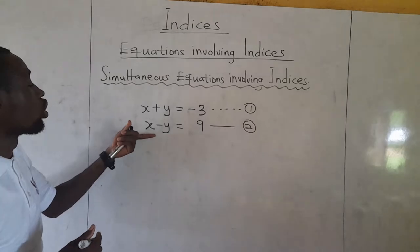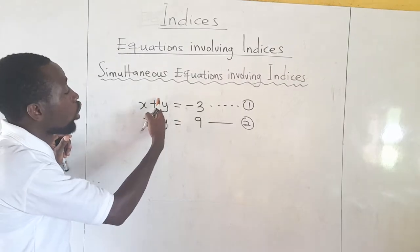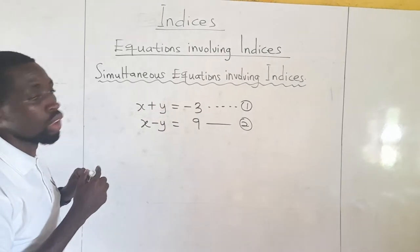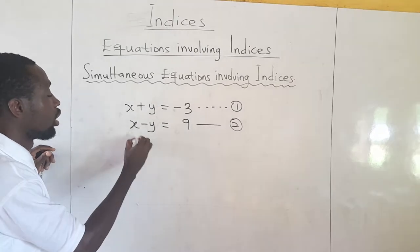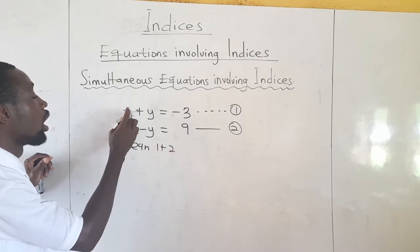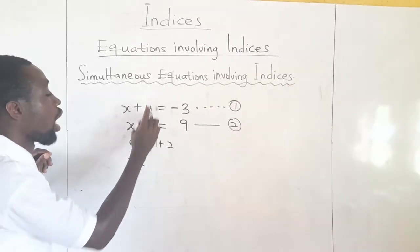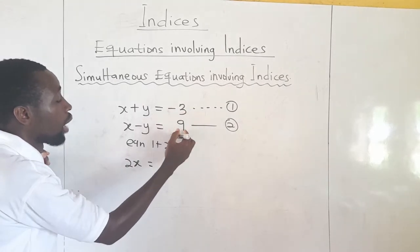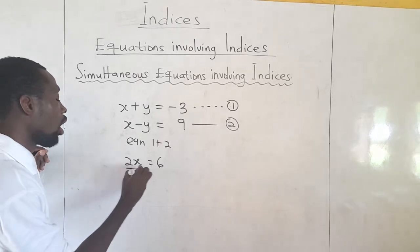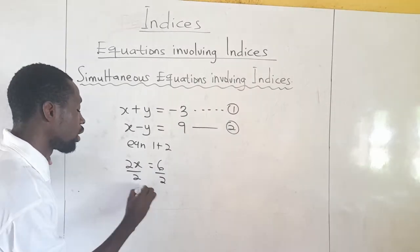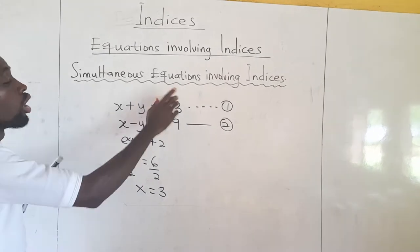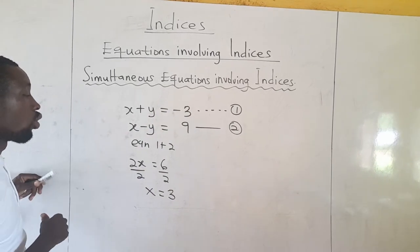I want to use elimination. The coefficient of y here is 1 and the coefficient here is also 1. So if I add the two equations, since this y is positive and this is negative, I will eliminate the y. Adding equation 1 plus equation 2: x plus x gives 2x, y plus negative y is 0, then negative 3 plus 9 is 6. So I've eliminated y. I'll divide both sides by 2 to find x, giving x equals 3.